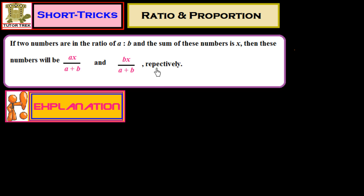So if the ratio of two numbers is given to us and their sum is given to us, and we have to find out the numbers, we could use these short tricks. We multiply the first ratio with the sum of the numbers and divide by the sum of the ratio, and similarly for the other number.